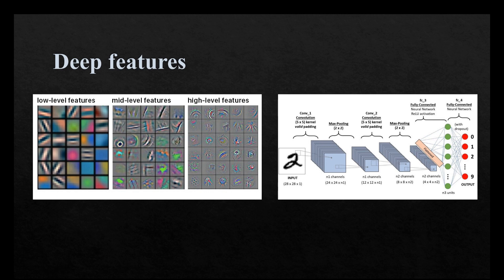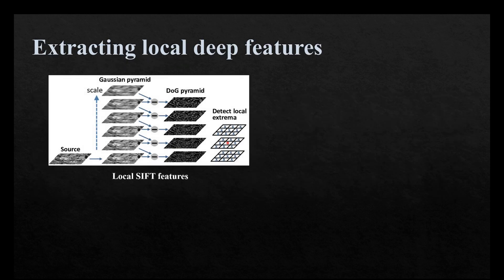Even though CNN features could be very useful for image registration, the possibility of extracting local features of an image with x and y coordinates associated with them is not straightforward. SIFT features are extracted from a specific position in the image with a known x and y coordinate. However, in the case of CNN features, the whole image is usually fed into the network and features of the whole image are extracted with no x and y coordinates appended to them.